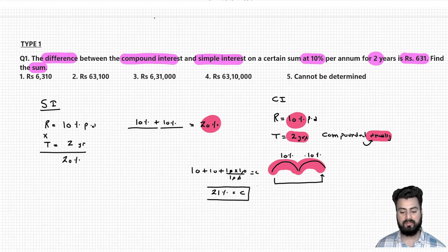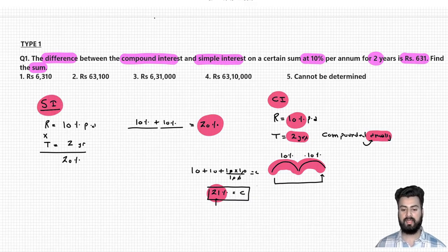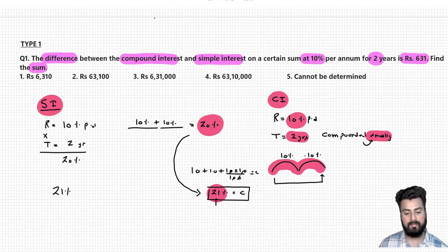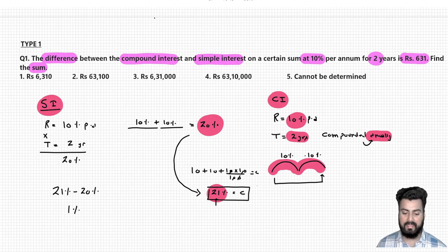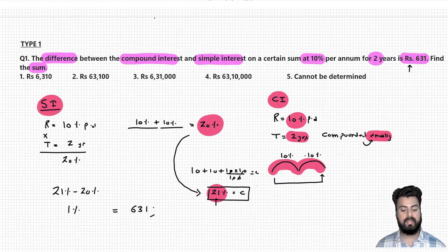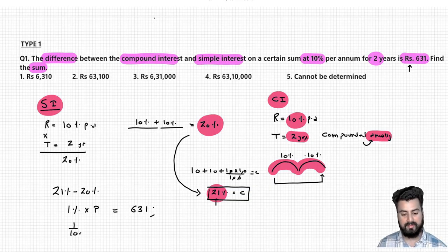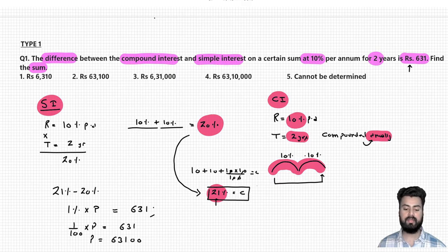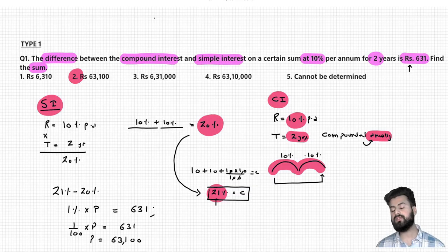Comparing the two effective rates of interest for SI and CI, CI is more rewarding. The difference between CI and SI is 21% minus 20%, which is 1%. According to the question, the difference value is 631. So when I calculate 1% of the principal, the value should be 631. Removing the percentage sign gives 100 in the denominator, and from here we can calculate the principal: this would be 631 × 100 = 63,100. So the correct answer is option 2.